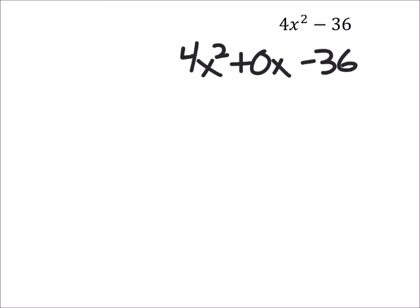It'll always be plus zero x, meaning that the two factors of that last value have to add up to zero, which is convenient. They always will as long as that's a perfect square. So 36, which in this case now is our c value.